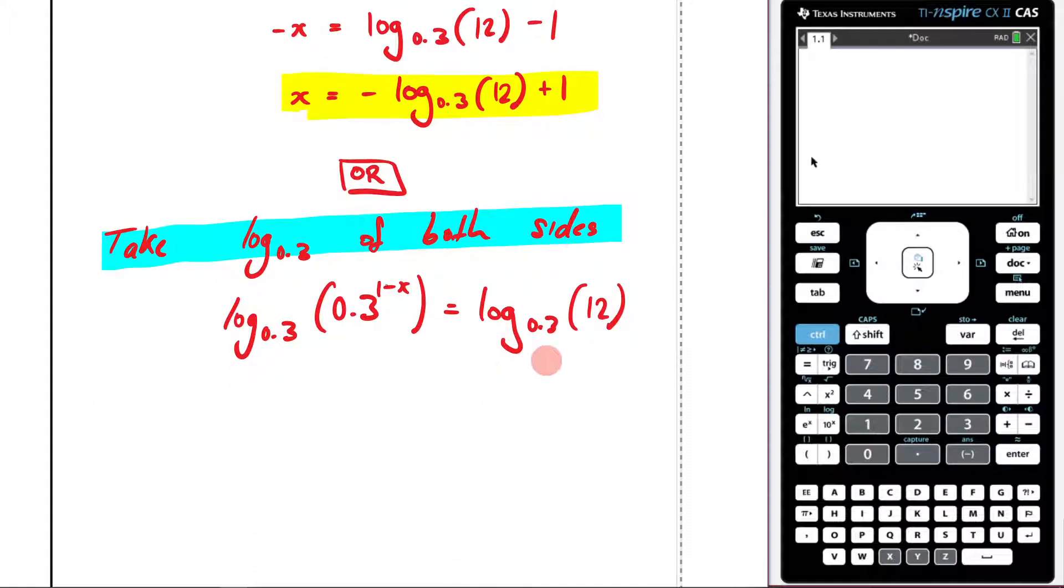And then once we're here, I can now take this power to the front: 1 minus x times log base 0.3 of 0.3 is equal to log base 0.3 of 12.